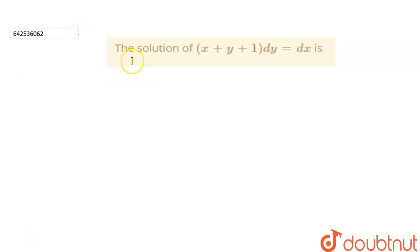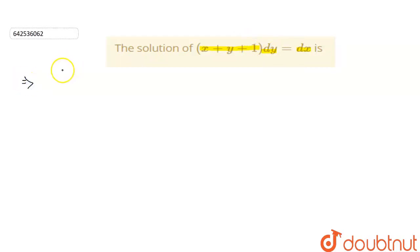Hello students. The solution of (x + y + 1)dy = dx is... First of all, we have to convert this equation into a linear differential equation.